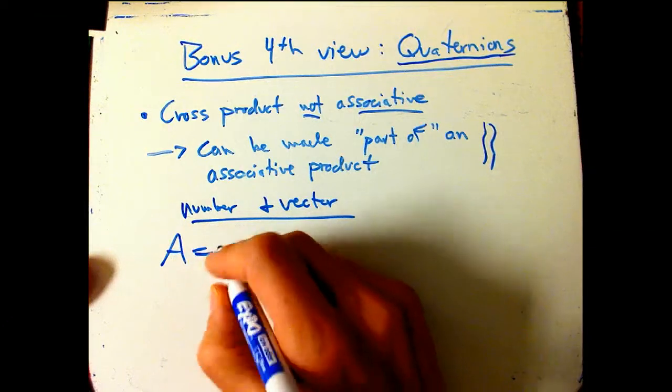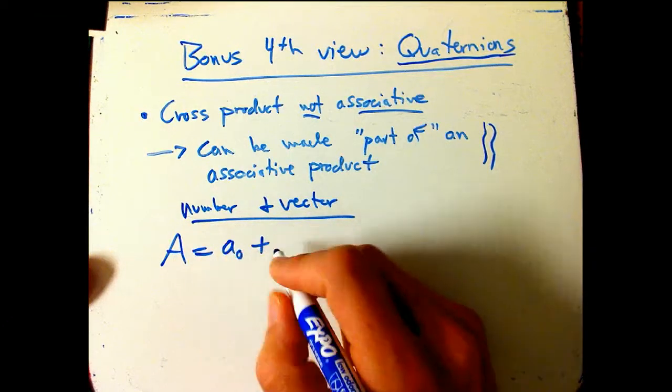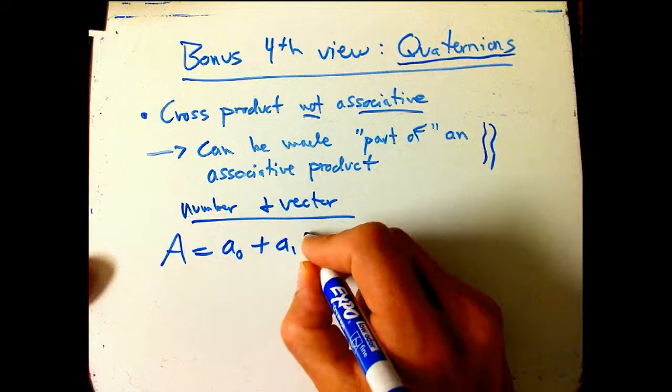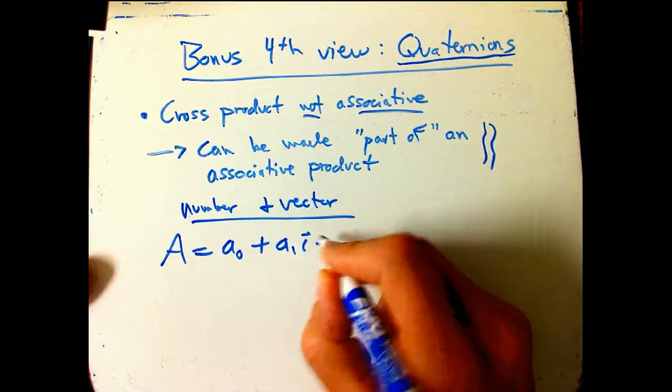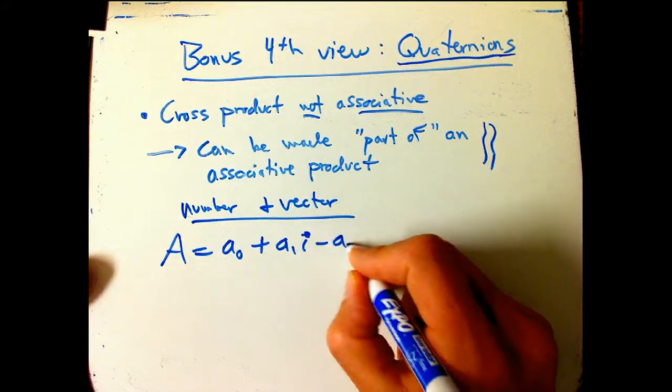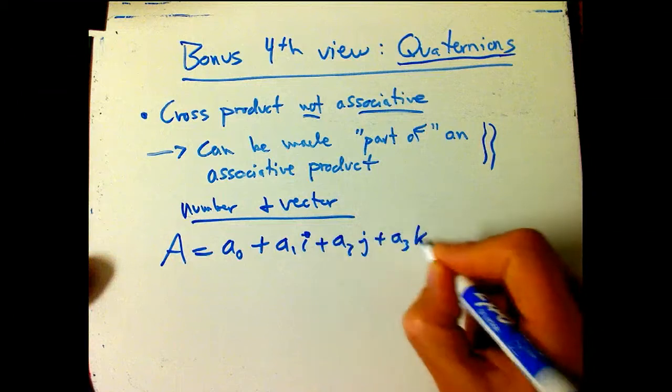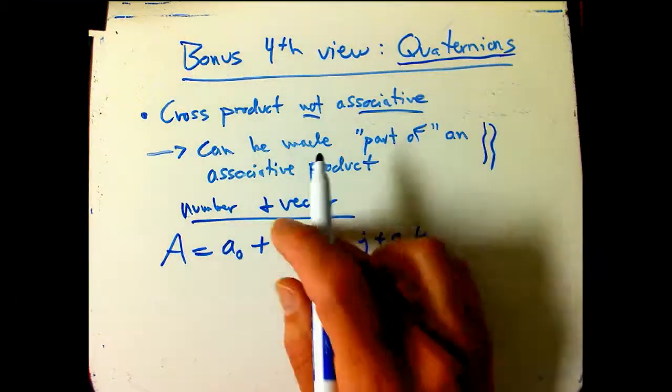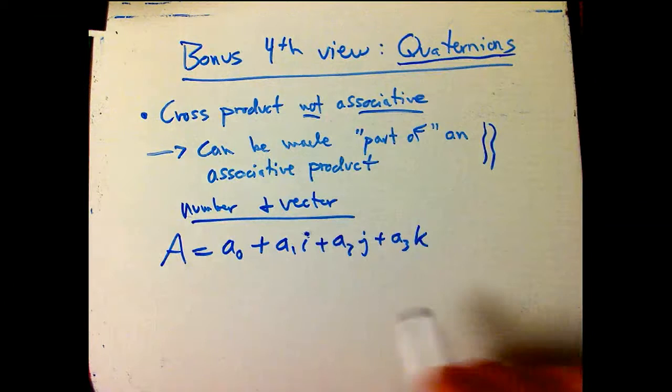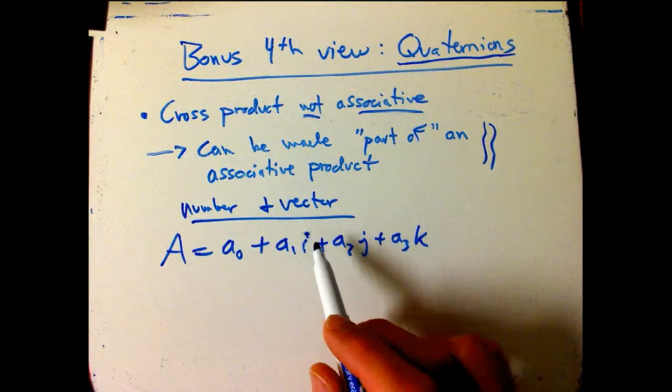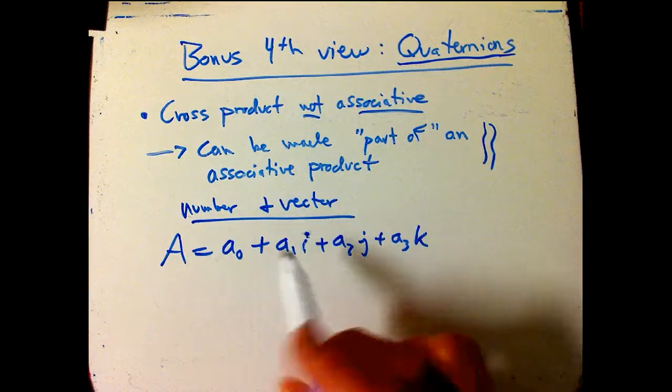So here's what we do. Let's say capital A is a combination of a number a₀ plus a₁i plus a₂j plus a₃k. You can think of i, j, and k as the standard basis vectors, but we're just going to really think of them as symbols right now, very much like i is a symbol, an algebraic symbol, in complex numbers.